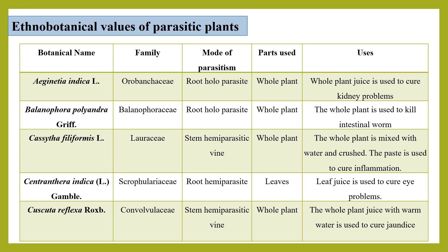Some ethno-medicinal values of parasitic plants. Aeginetia indica — whole plant juice is used to cure kidney problems. Balanophora polyandra — the whole plant is used to kill intestinal worms.